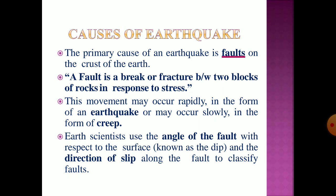Next, we discuss the causes of earthquakes. The primary cause of an earthquake is faulting in the crust of the earth. A fault is a break or fracture between two blocks of rocks in response to stress. This movement may occur rapidly in the form of an earthquake, or may occur slowly in the form of a creep.